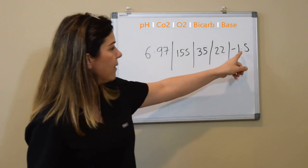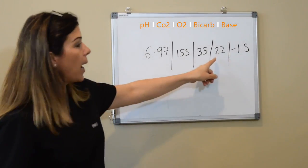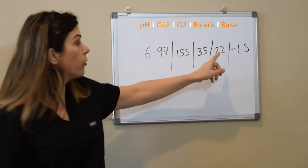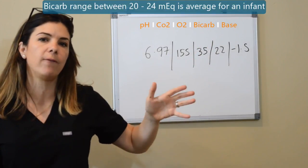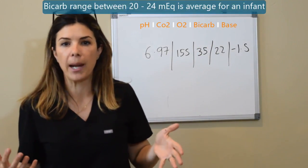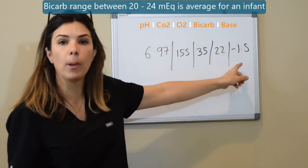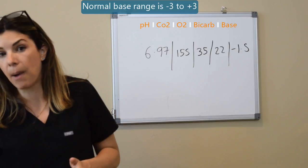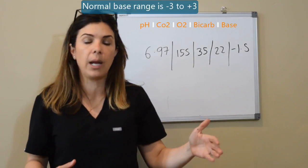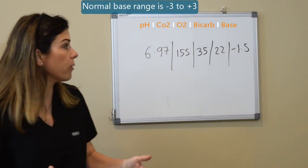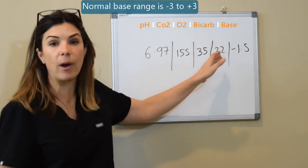What about the base and the bicarb here? A bicarb of 22 is actually very normal for a baby. Really between 20 and 24 milliequivalents of bicarb is normal for a baby. And that's a completely normal base as well. If it was less than minus 3 or more than plus 3, then we would be worried about metabolic acidosis or metabolic alkalosis. In this case, it seems very normal.